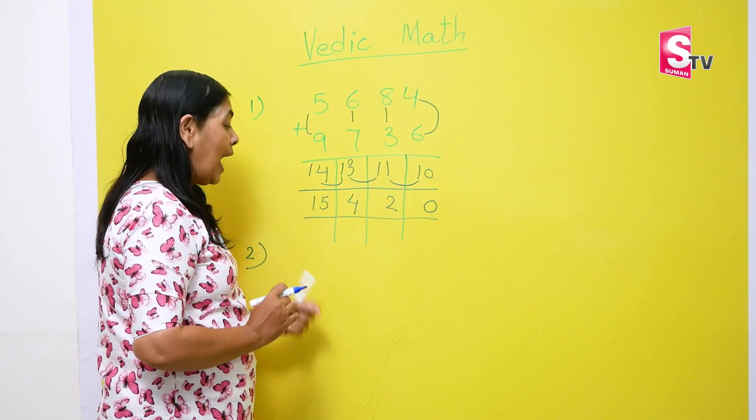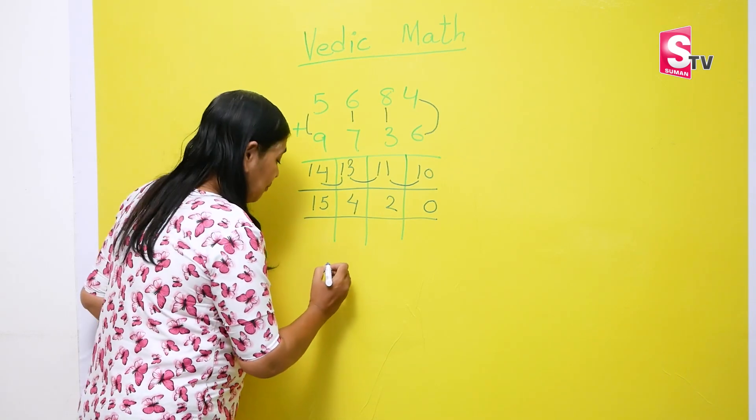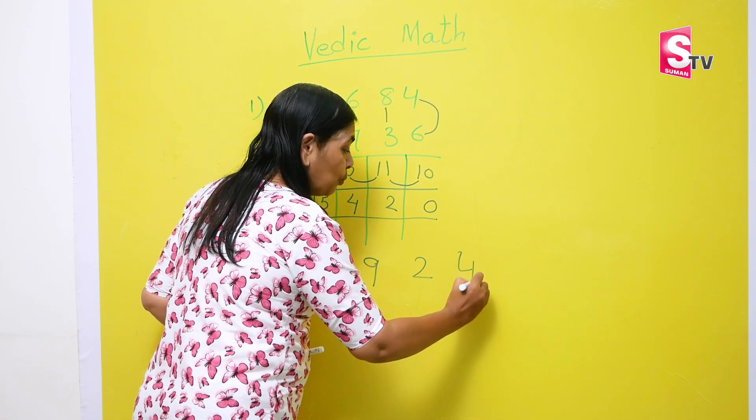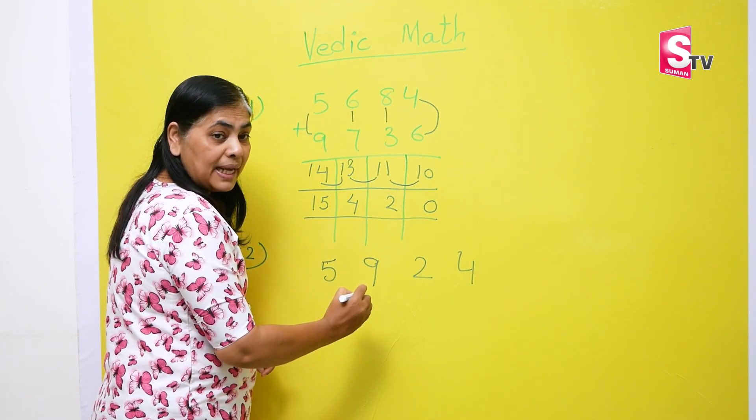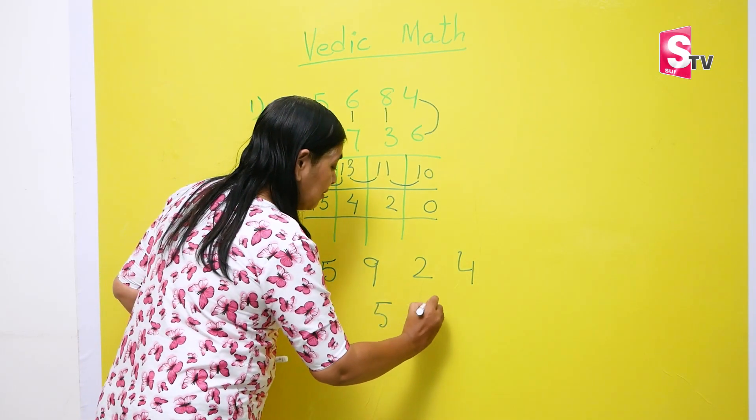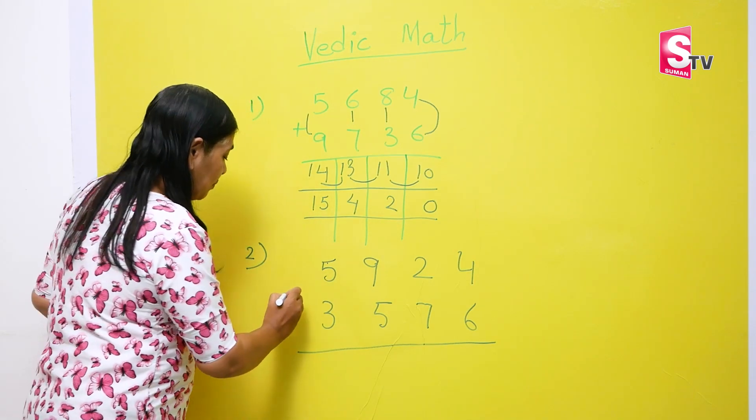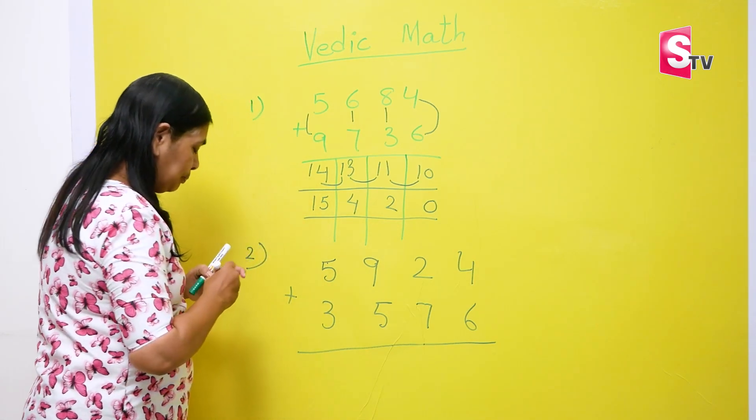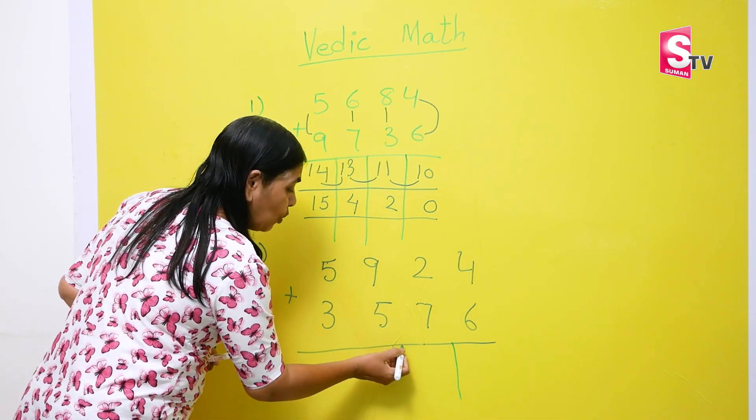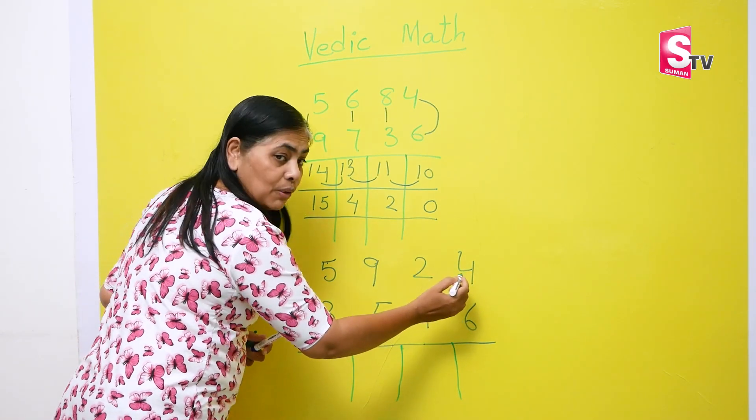Now, if I have to ask you one number. Let me take 5924. And the other number I am taking is 3579. Now, what is the method which we are doing? We are adding it. So, what is the method we'll use? Nothing. First step is draw 4 lines. You did this.